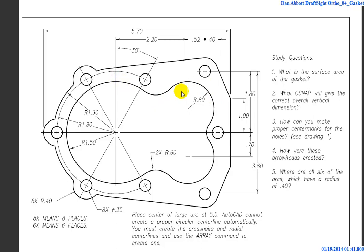There are a lot of tangencies here. We're going to take advantage of the tools built into DraftSight. This exercise was developed for AutoCAD, but DraftSight is an AutoCAD work-alike, so the same approach applies in both. I'm going to start by placing the center of those large arcs at 5,5 and then build this gasket. The more complex a part gets, the more ways there are to approach it — as long as your geometry is accurate when you're done, it doesn't matter what approach you use.